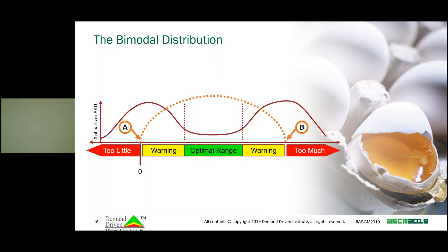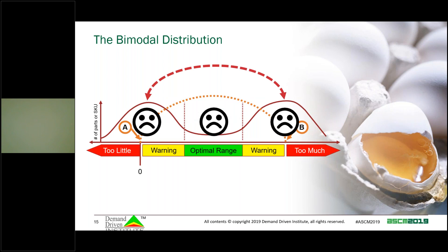Most companies exhibit what we call the bimodal distribution. You've got a lot of parts where you don't have enough — clustered around too little — and a lot of parts around too much, and almost no parts in that optimal range. We've all agreed we'd like inventory balances in that optimal range, and in fact what we're doing today does not put us there. With every run of MRP, parts move from too little to too much and back, oscillating into infinity.